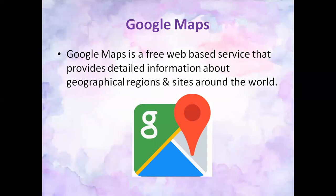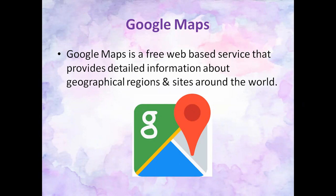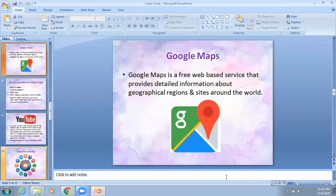The next service provided by Google is Google Maps. Google Maps is a free web-based service that provides detailed information about geographical regions and cities around the world. For example, if you are going to Jaipur and don't know which route to follow, you can start the navigation system in your car or phone and get the correct route with lesser traffic to reach your destination on time.